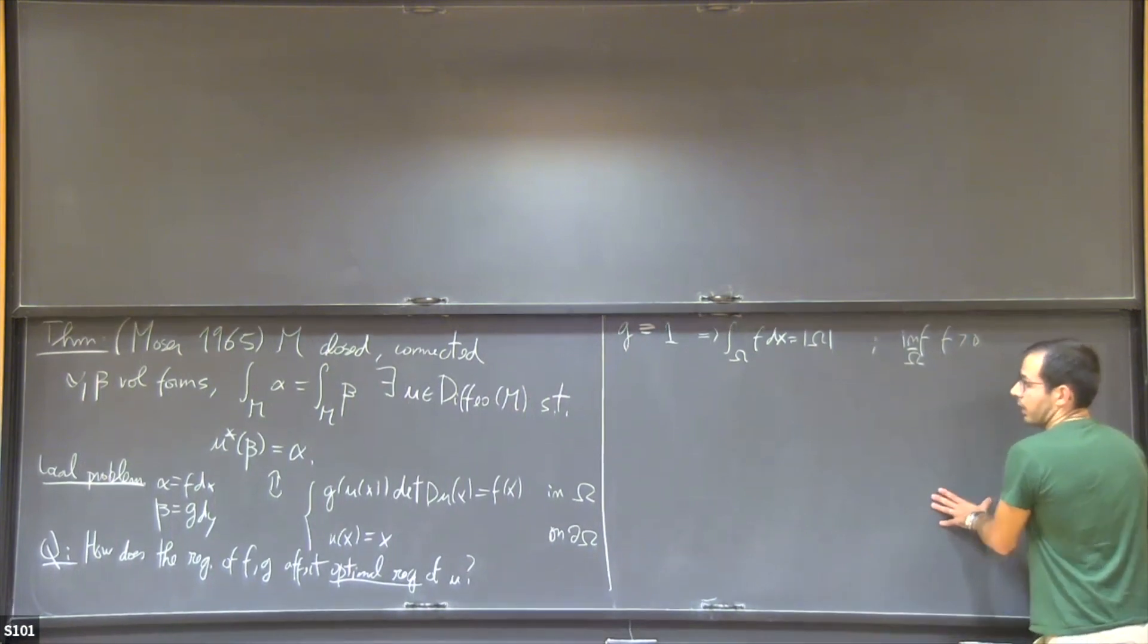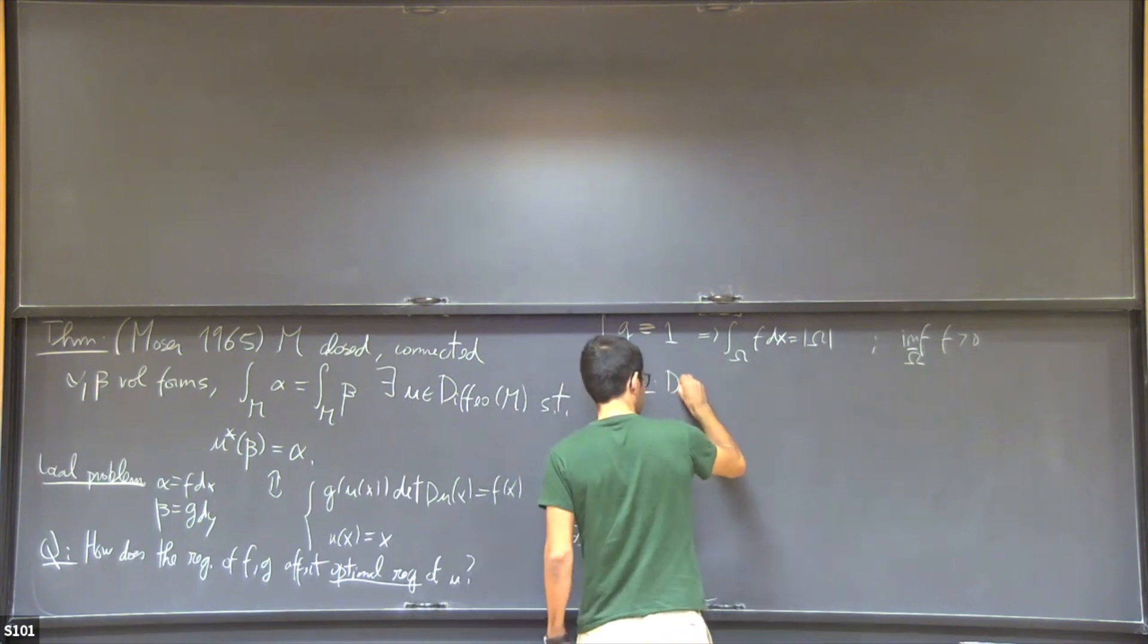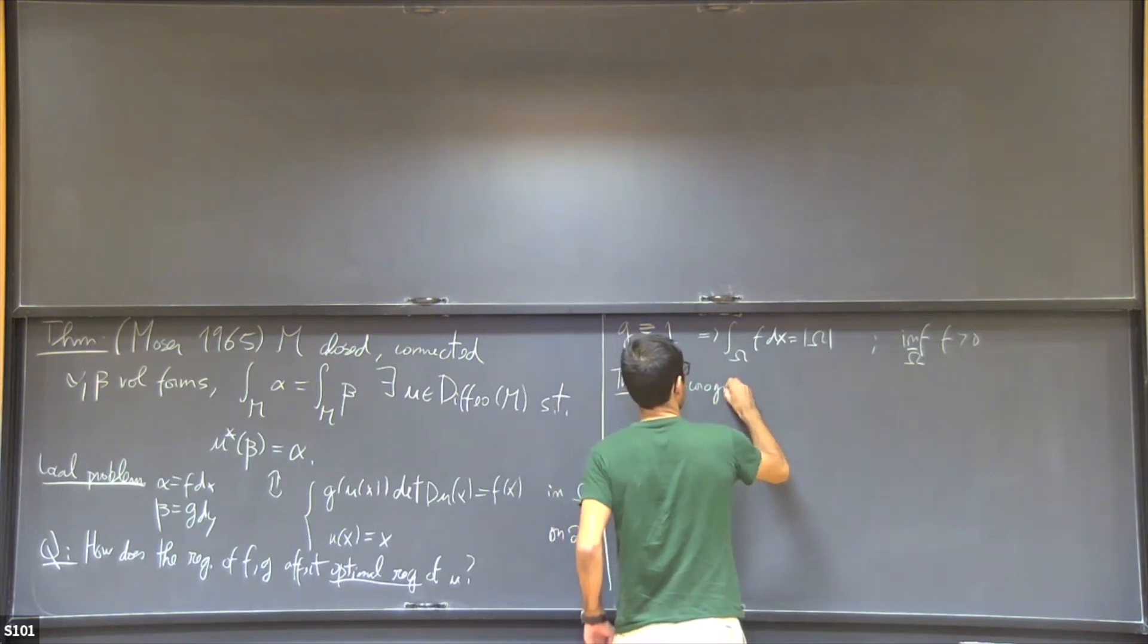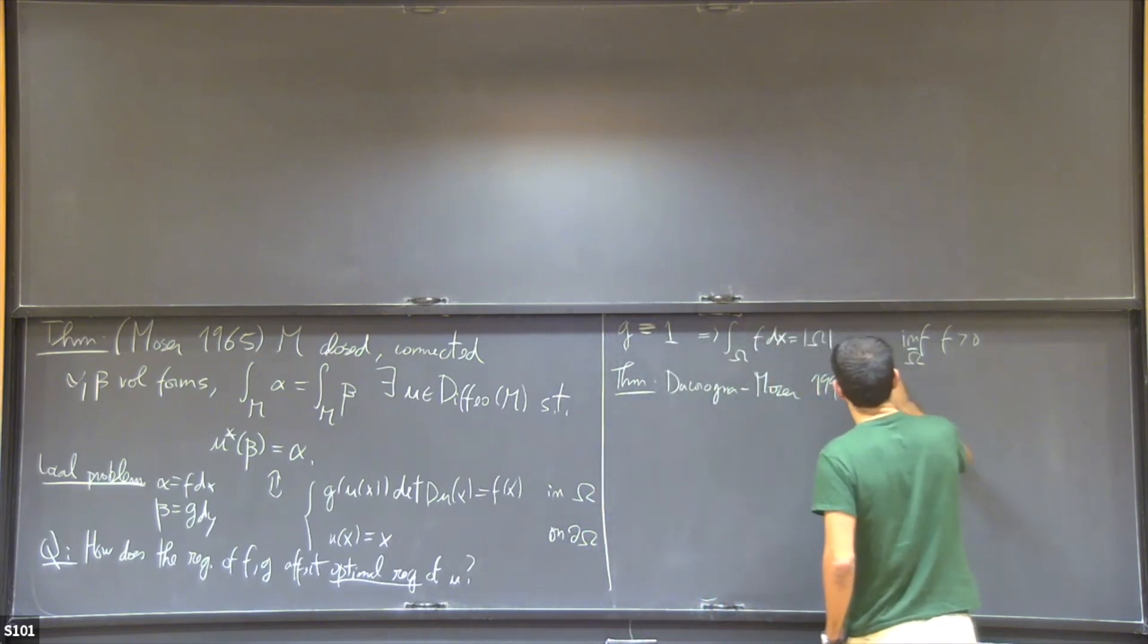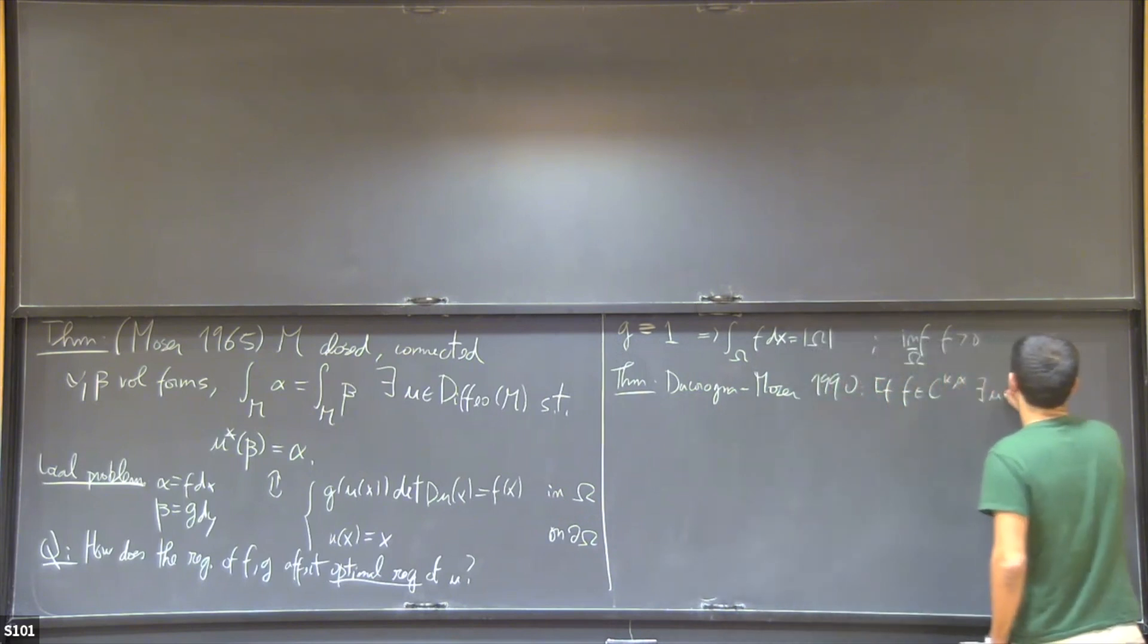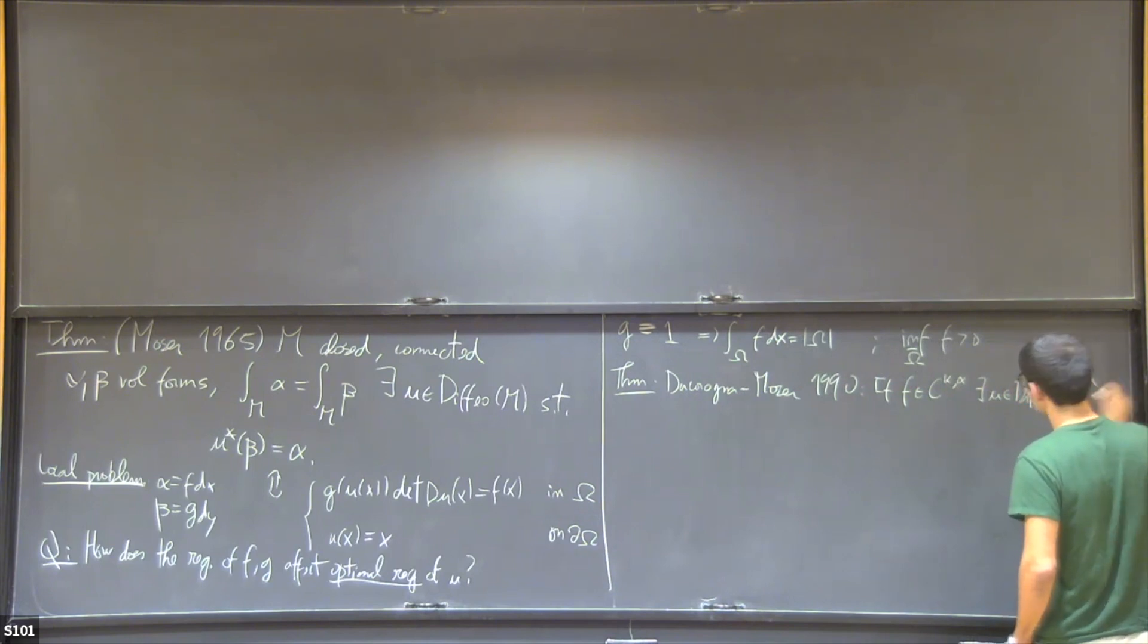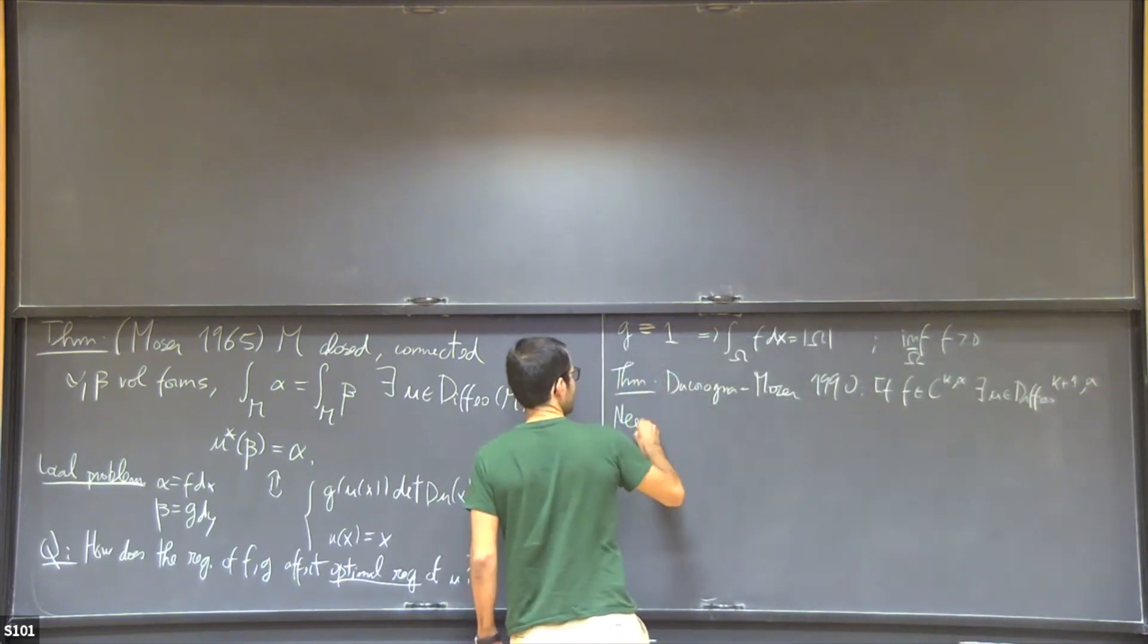In the direction of my question, there's another theorem, proved by Moser as well with Dacorogna in 1990. They showed that if f is a C^{k,α} function, then you can find a solution u which is a diffeomorphism C^{k+1,α}. This is a first-order PDE, so this is optimal regularity. For a genuinely C^{k,α} function, you cannot find a solution with better regularity. Here I should say that we need alpha to be strictly positive.